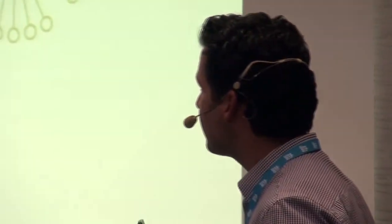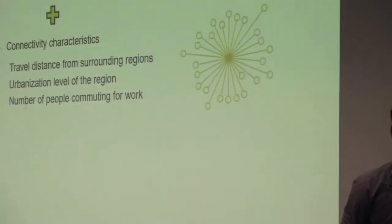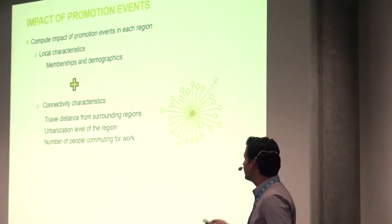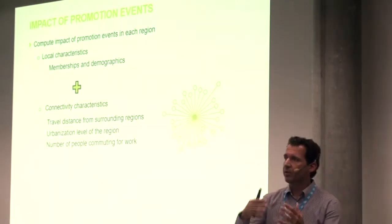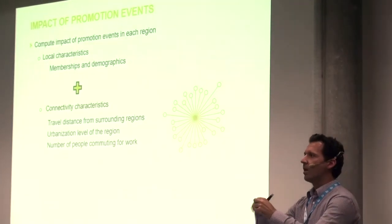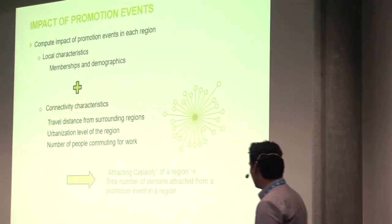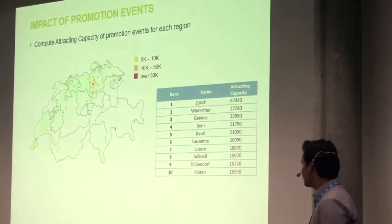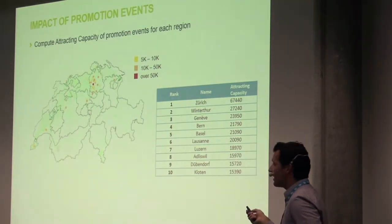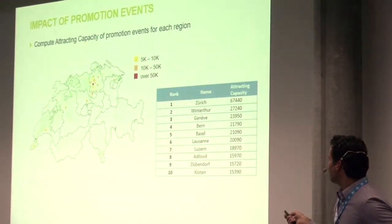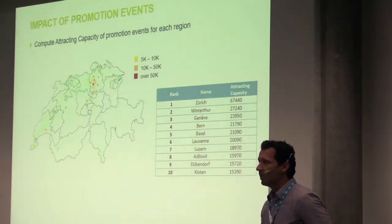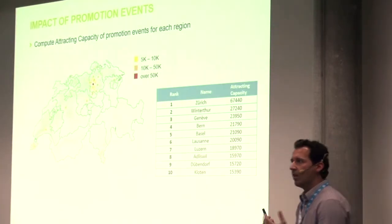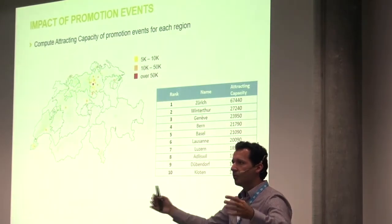The first thing we did was compute the impact of promotion events in each region. We used local information in the regions together with the current member base, various demographics, and connectivity criteria between regions. We treat a region as a node in a graph where other nodes are other regions, allowing us to compute what we call the attracting capacity of the region — how many members can be attracted when a promotion event takes place. The number one region in attracting capacity for the young target segment was Zurich, of course. Surprisingly, number two was Winterthur — not the second biggest city, but it makes sense because Winterthur is very close to Zurich and other urban regions and is very well connected.